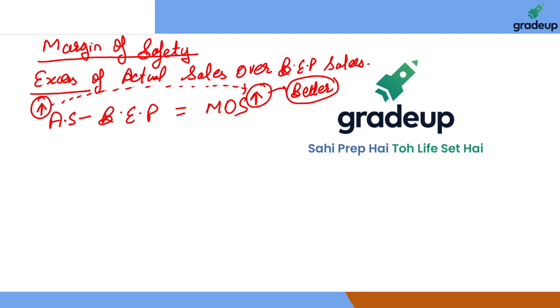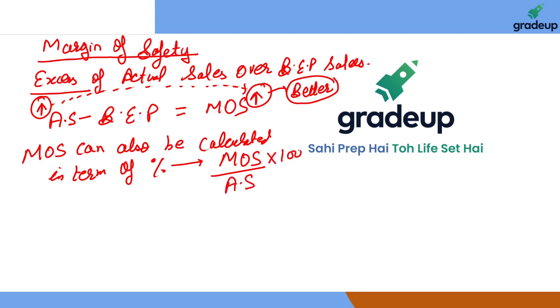Now that particular margin of safety can also be calculated in terms of percentage. What does it mean? The margin of safety as a percentage of actual sales - that is margin of safety divided by actual sales into hundred.